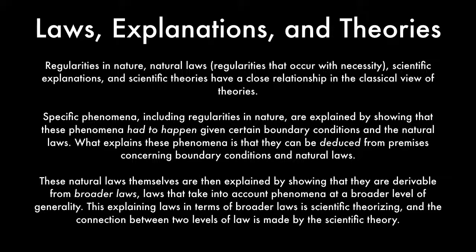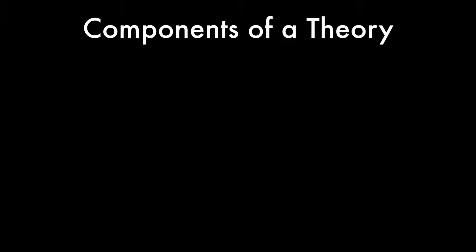The classical view of scientific theories builds on and incorporates the deductive nomological model of scientific explanation. These natural laws that do explanatory work of particular phenomena and regularities themselves are then explained by showing that they are derivable from even broader laws — laws that take into account phenomena at a broader level of generality. This explaining of laws in terms of broader laws is scientific theorizing, according to the classical view, and the connection between two levels of law is made by the scientific theory. So, individual phenomena are explained by scientific explanations, and the laws used in those scientific explanations are explained by even broader laws, and what does the explaining of one set of laws in terms of a broader set of laws is a scientific theory.